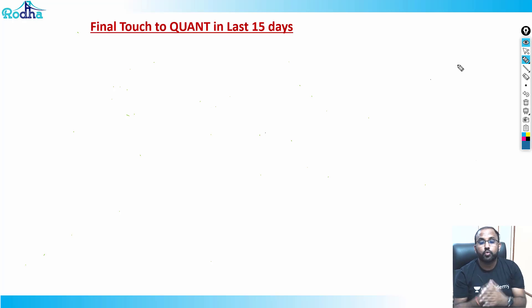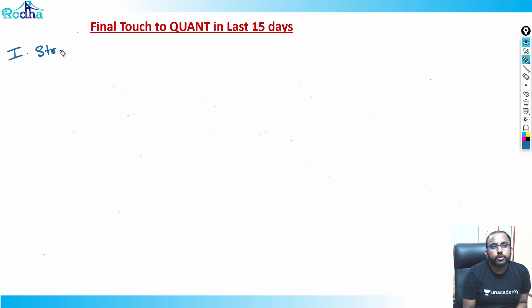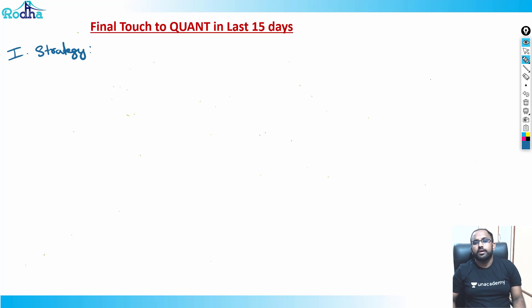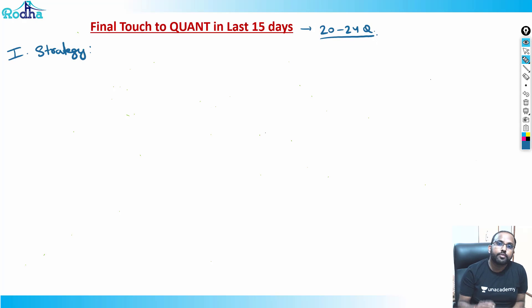Hi guys, let's discuss the final touch for quant in the last 15 days — what you should do best in these last 15 days to do well in quant. First, I'll talk about strategy — how you should attempt these papers. Unlike CAT 2018 or 2019, there are no longer 34 questions. The paper has reduced, so we expect around 20 to 24 questions, and the time is 40 minutes.